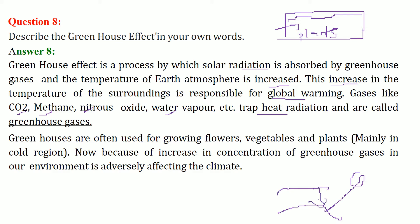These gases trap heat and don't allow it to escape. As a result, temperatures rise, glaciers and ice melt, and water levels increase. Islands and landmasses close to the sea or glaciers will be submerged in water. These greenhouse gases are very harmful. Due to the increase in concentration of greenhouse gases in our environment, the climate is adversely affected as temperatures continue to rise, and we are witnessing climate change.